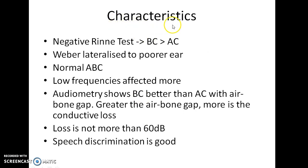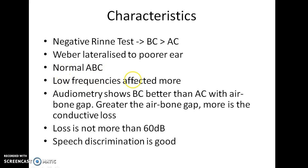What are the characteristics of conductive hearing loss? Negative Rinne test, i.e., bone conduction will be better than air conduction. Weber lateralized to the poorer ear. Normal absolute bone conduction. Low frequencies will be affected more. Audiometry shows bone conduction better than air conduction with an air-bone gap.